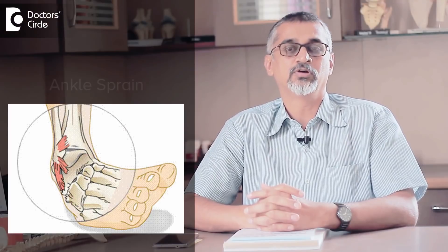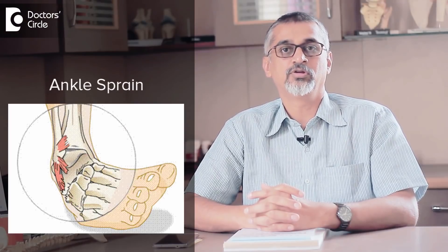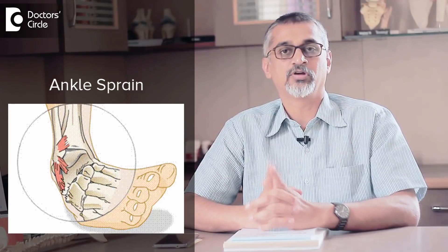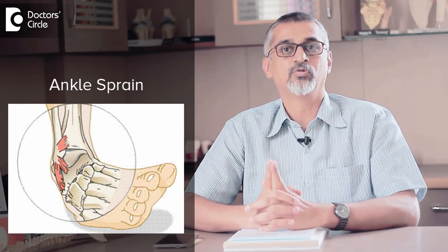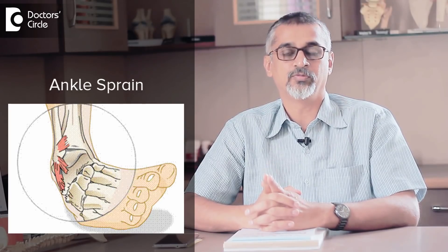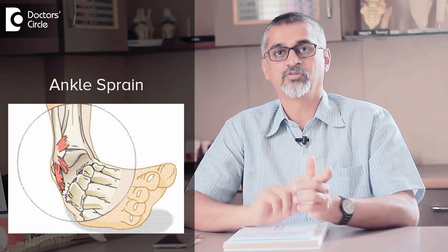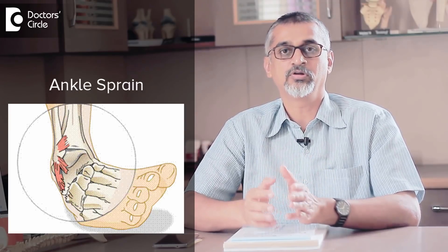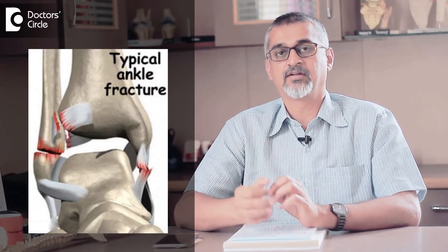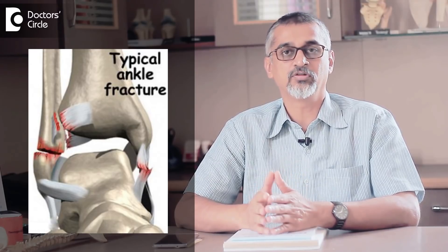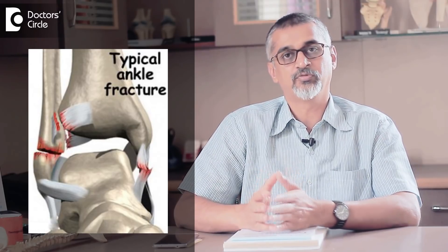What is a sprain? A sprain is an injury to the ligament. What is a ligament? A ligament is a connective tissue which connects two bones that form a joint. Two bones form a joint and the connecting tissue which runs from one bone to the other is called a ligament. So when this gets injured, you call it a sprain. When the bone which it is connecting breaks, you call it a fracture. So these are two different entities that can happen from a similar type of injury.